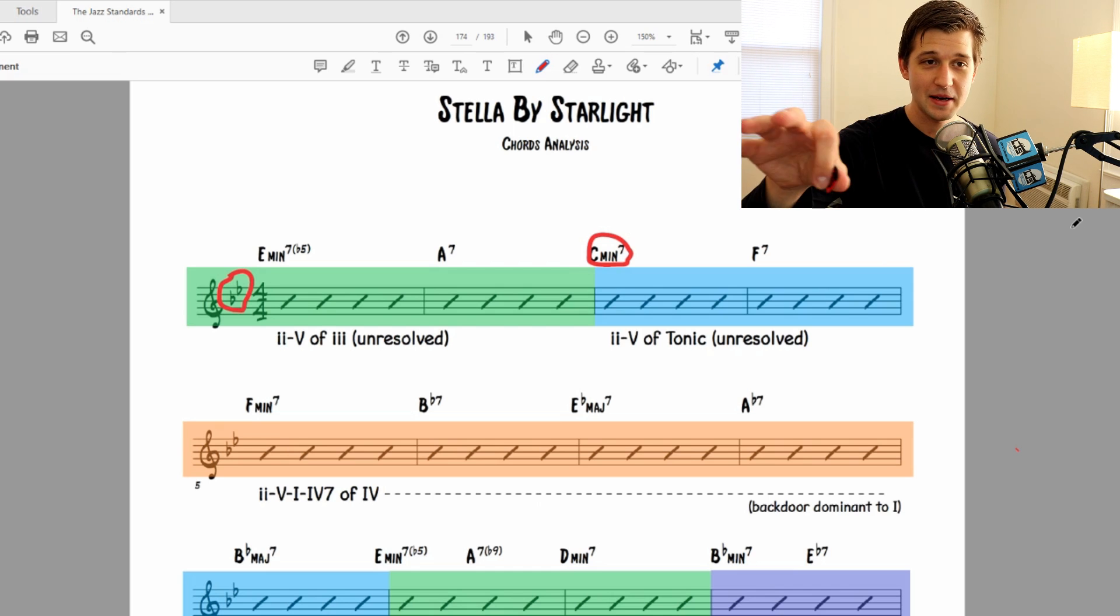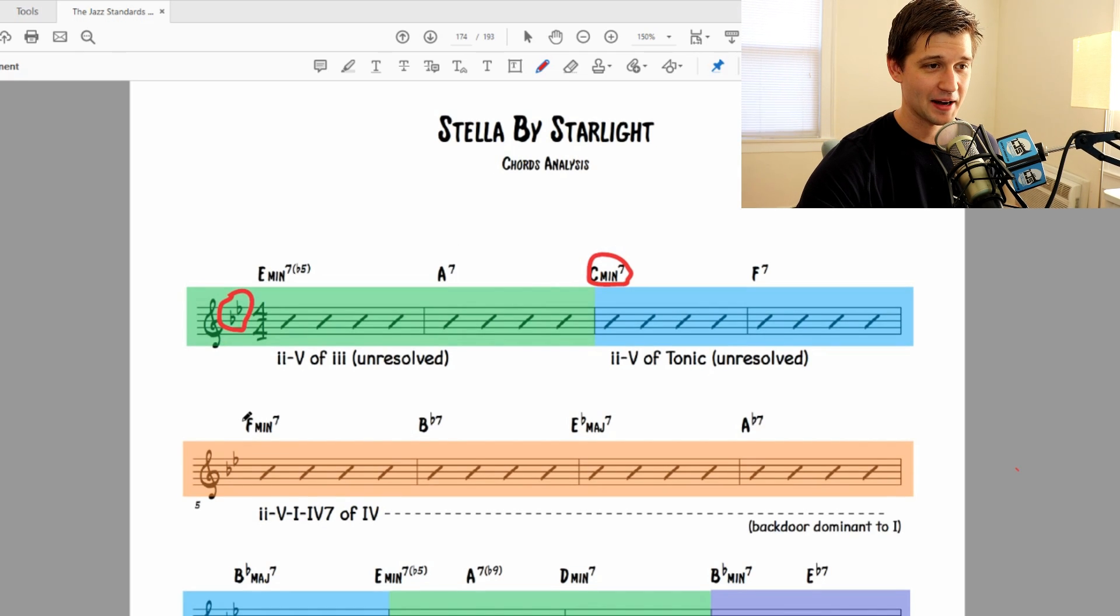If you look into bar 3, what chord are we playing here? C minor 7. So obviously we're going somewhere else. So that's an unresolved 2-5. And you're going to see this come up quite a bit. So 2-5 of 3 unresolved because we're landing on a C minor 7 to an F7. Now, I have bars 3 and 4 blue. That's the parent key center, B flat major, because that is a 2 and a 5 of the tonic. Once again though, it's unresolved because if you look ahead at bar 5 here, we're not landing on a B flat major, are we?